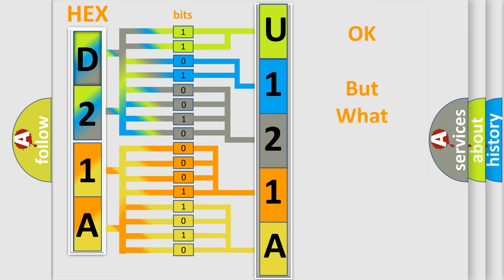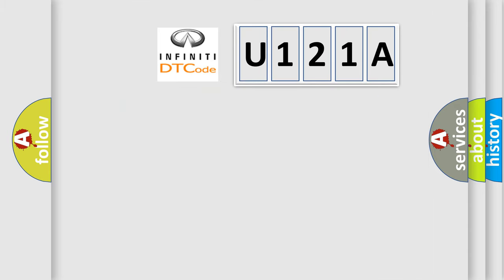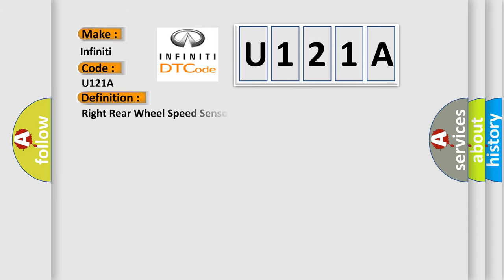The number itself does not make sense to us if we cannot assign information about what it actually expresses. So, what does the diagnostic trouble code U121A interpret specifically for Infiniti car manufacturers? The basic definition is: right rear wheel speed sensor circuit. And now here is a short description of this DTC code.